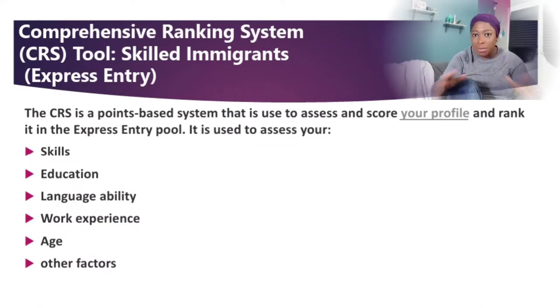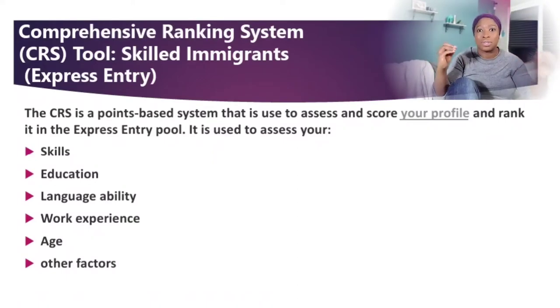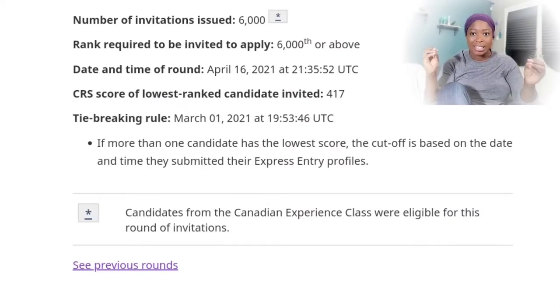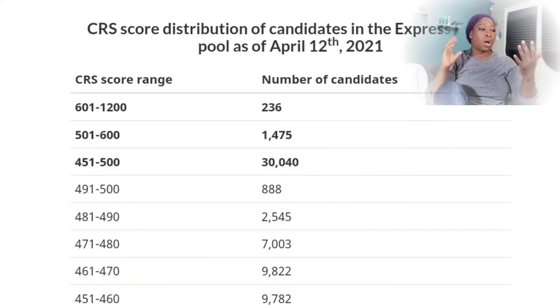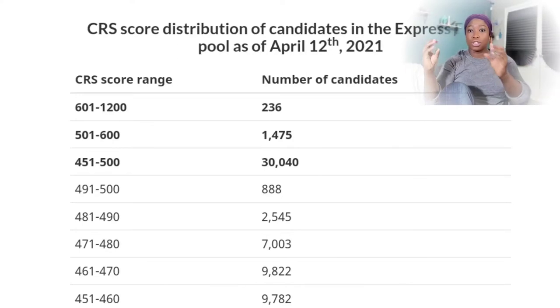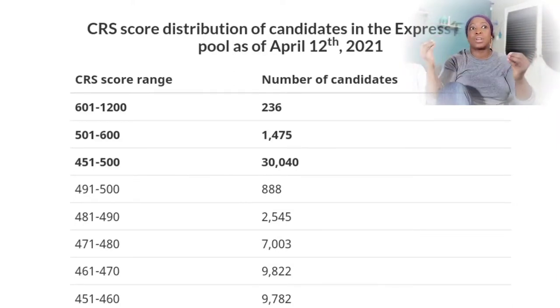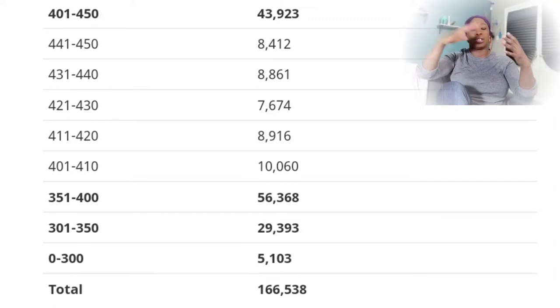Once you start your Express Entry profile, you have 60 days to complete it. If you can't submit within 60 days, you'll have to start again — so make sure everything is ready before you begin. If you submit within 60 days, be ready to accept an invitation anytime. If you're among the top-ranking candidates, Canada can invite you to apply for permanent residence. For example, if your score is 478 and the cutoff is 456, you'll be selected in the next round of invitations — this is called an Invitation to Apply (ITA).